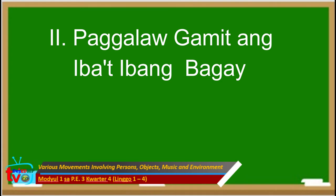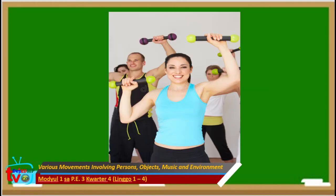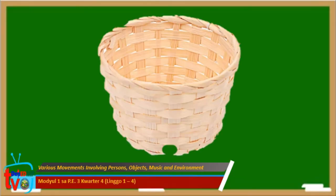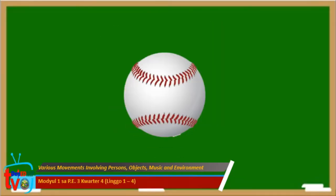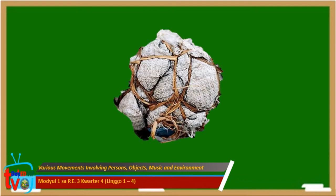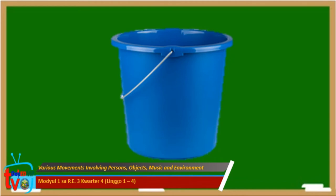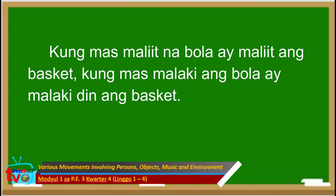Ikalawang paggalaw ay ang paggalaw gamit ang iba't ibang bagay — kahit anong bagay na maaaring gamitin na pansayaw o pang-ihersisyo. Ang maaaring gamitin sa gawain ito ay bola at basket. Ang klase at laki ng bola ay depende sa kung ano ang meron sa bahay o pwedeng improvised na bola at basket. Pwede rin timba o kahit anong bagay na magsisilbing basket. Kung mas maliit na bola, ay maliit din ang basket. Kung mas malaki ang bola, ay malaki din ang basket.